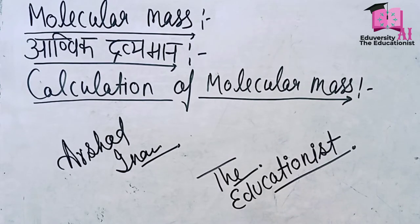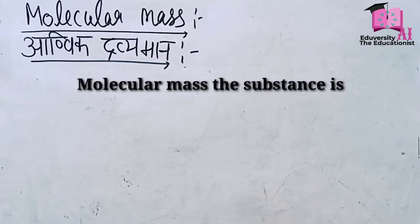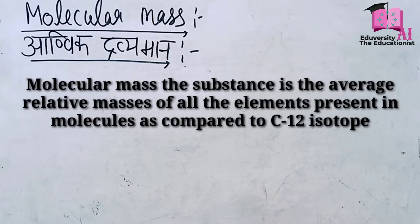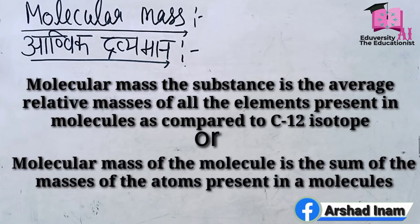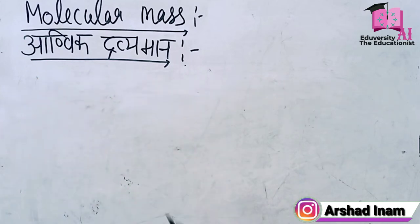Now without wasting time, let's start. According to the NCERT, molecular mass of a substance is the average relative mass of its molecule as compared with that of an atom of carbon-12 isotope taken as 12. In simple language, molecular mass is the sum of the masses of all the atoms present in one molecule of the substance. This is also called anuvik mass or anuvik dhraman or molecular mass. Now let's see how to calculate this.